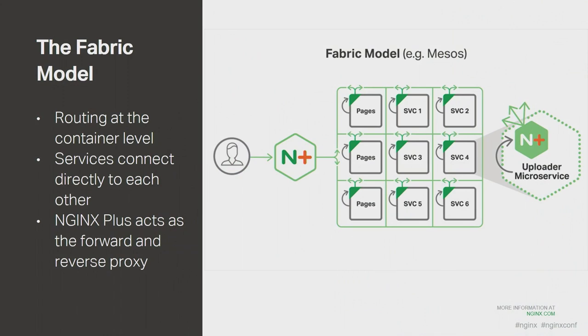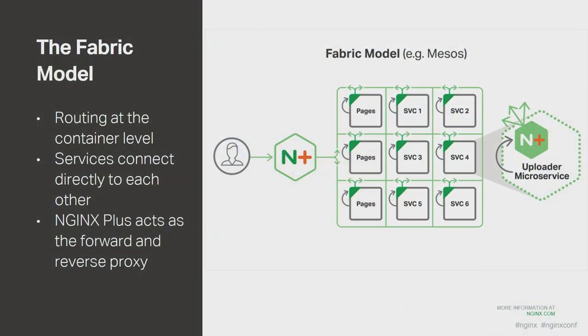The fabric model is the model that sort of flips everything on its head. Like the two other models, you have a proxy server in the front to manage incoming traffic. But where it differs from the router mesh is that instead of a centralized router, you have NGINX Plus running in every container — and this NGINX Plus instance acts as a reverse and forward proxy to all of the HTTP traffic. Using this system, you get service discovery, robust load balancing, and most importantly, high-performance encrypted networking.